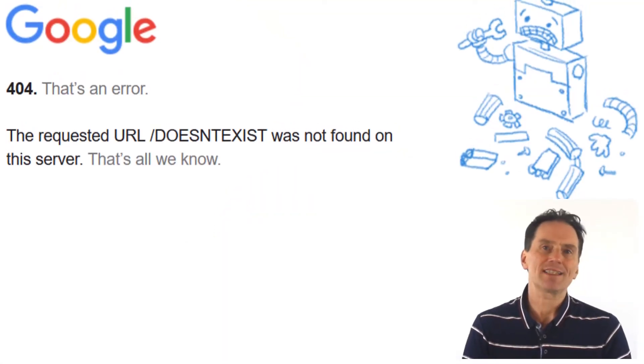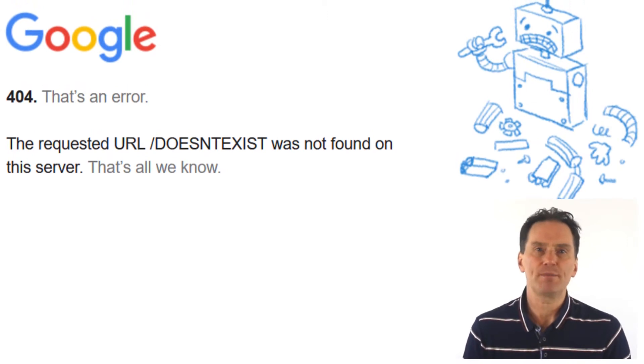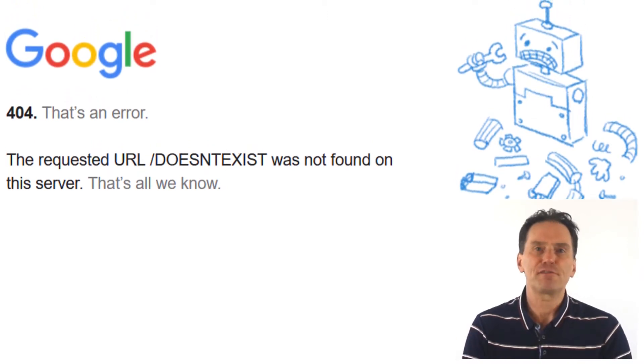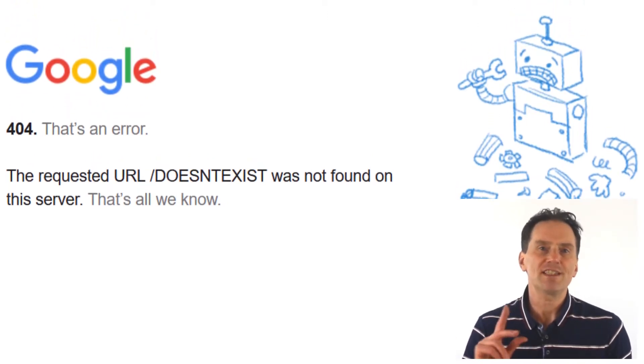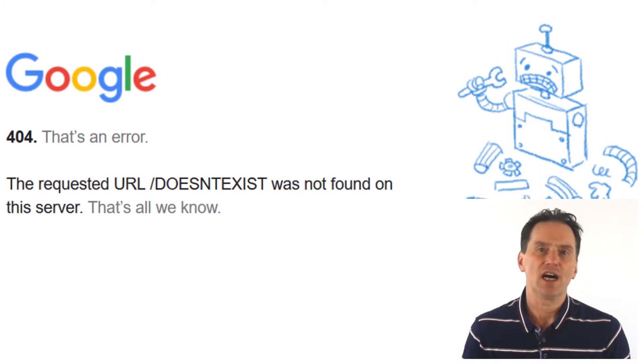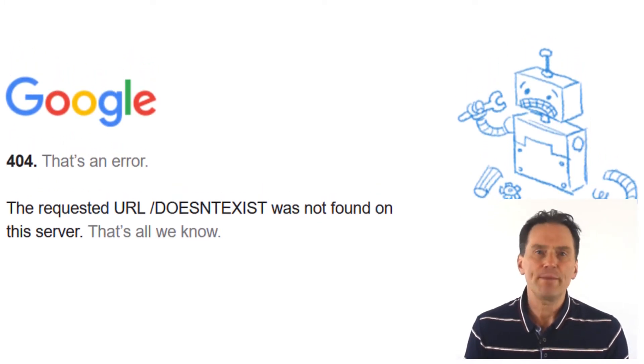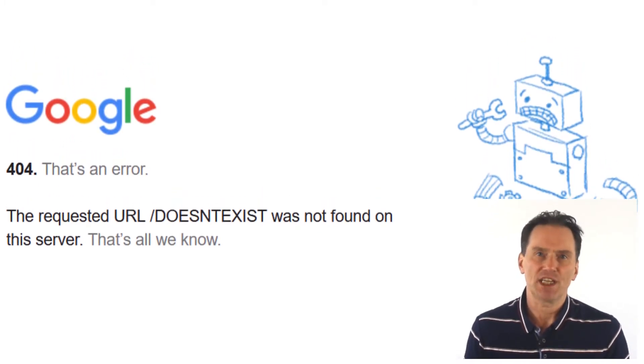It is possible to access restricted websites using a free website called the internet archive, which is also known as the Wayback Machine. If you are new to the internet archive, it stores historic and current copies of most websites.